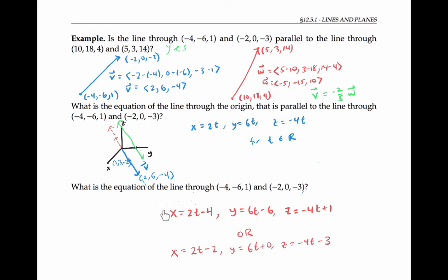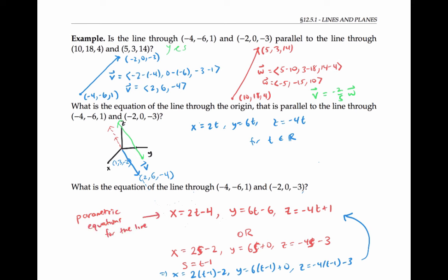To see that these two systems of equations define the same line, we can call the second variable s instead of t, and then make the substitution s equals t minus one. Plugging in t minus one for s, after a little bit of algebra, reduces to the first system of equations. These systems of equations are called parametric equations for the line. The parameter is t, and physically we can think of this as a particle moving along a line, with t describing the time and x, y, and z describing the position of that particle at time t.